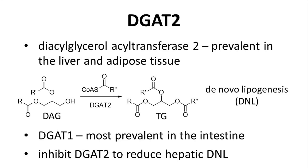In order to address this unmet medical need, many scientists, including those at Pfizer, looked at targets associated with the synthesis and transport of triglycerides in the liver. A target that has shown promise is DGAT2 — diacylglycerol acyltransferase 2. DGAT2 is an enzyme found in the liver and adipose tissue. The reaction catalyzed by DGAT2, shown on the screen, is the conversion of diacylglycerols with acyl-CoA to triglycerides.